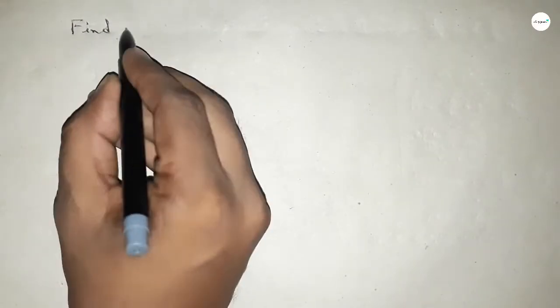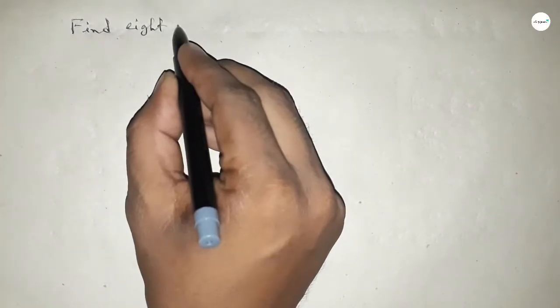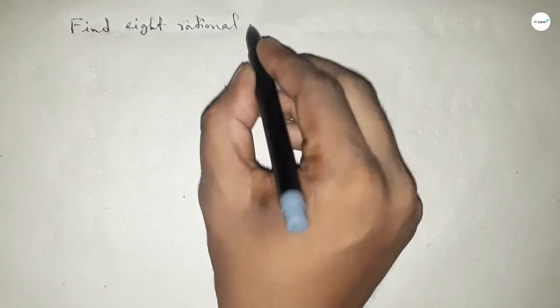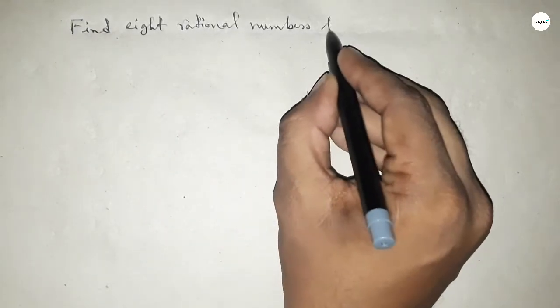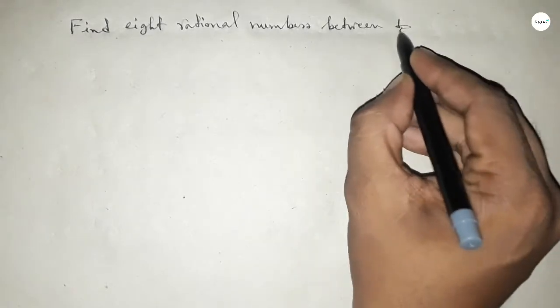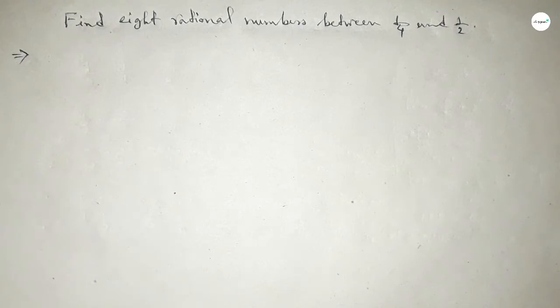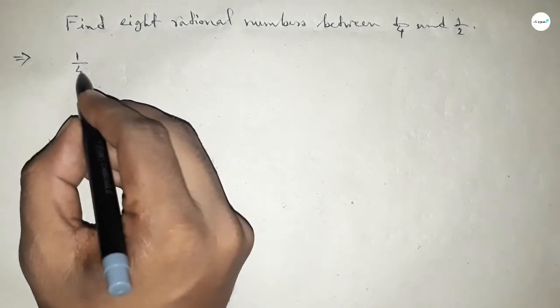Hi everyone, welcome to SSR Classes. Today in this video we have to find 8 rational numbers between 1 over 4 and 1 over 2. So let's start the video. First of all, write down here the given numbers: 1 over 4 and 1 over 2.